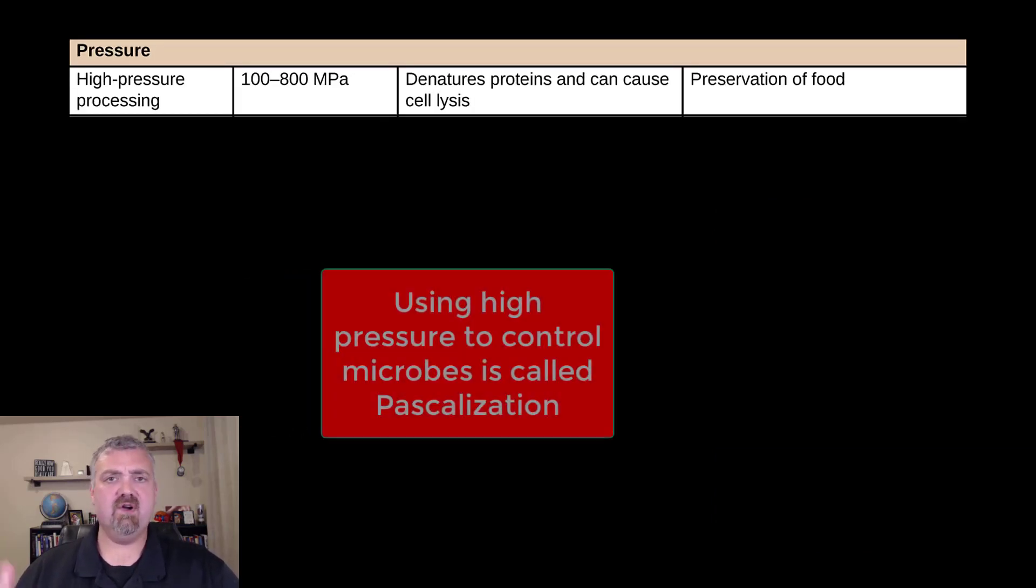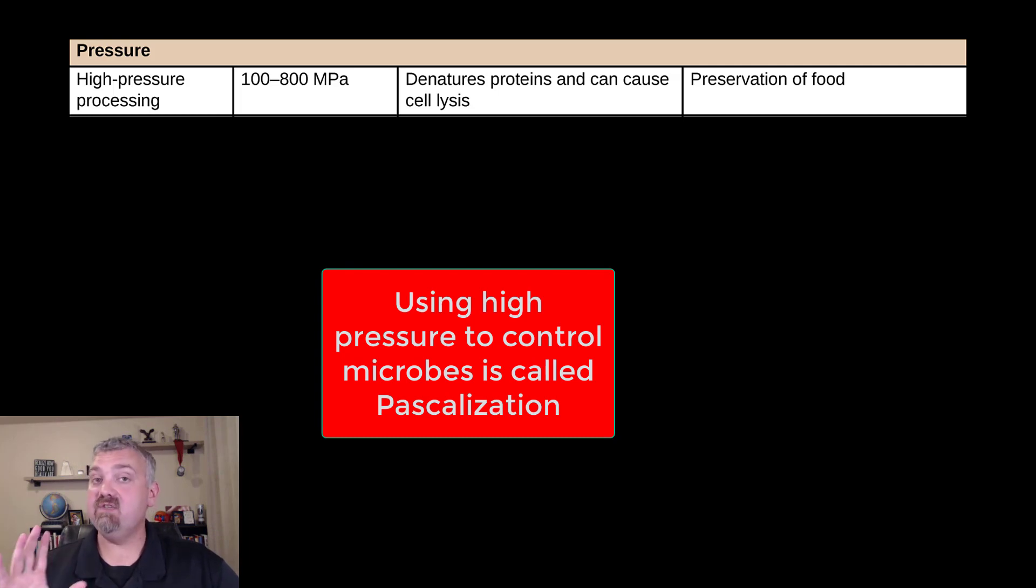Next we have pressure. So you may not have heard about this much, but it is being used in food. I've seen it primarily used in some deli meats and pre-cooked meats. But juices are where I've seen it used the most. So high pressure can denature proteins and cause cells to rupture just like using heat would. But the advantage of using high pressure is that it appears to maintain the quality and shelf life of the food better than using heat, at least in those situations, the examples I gave you.